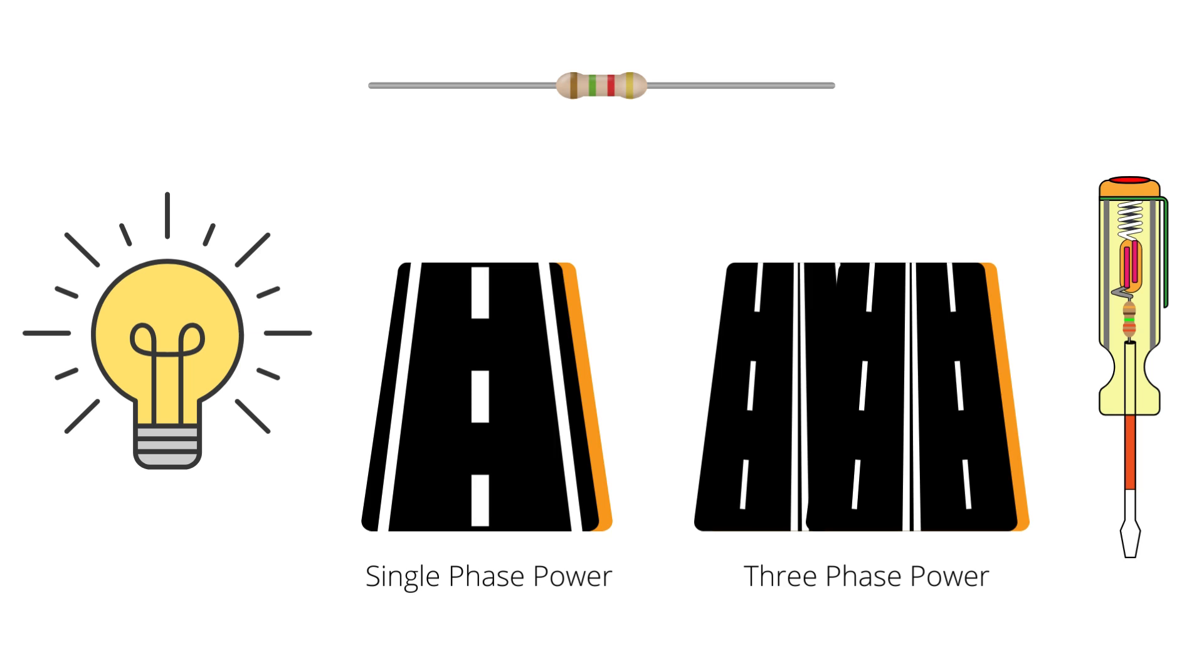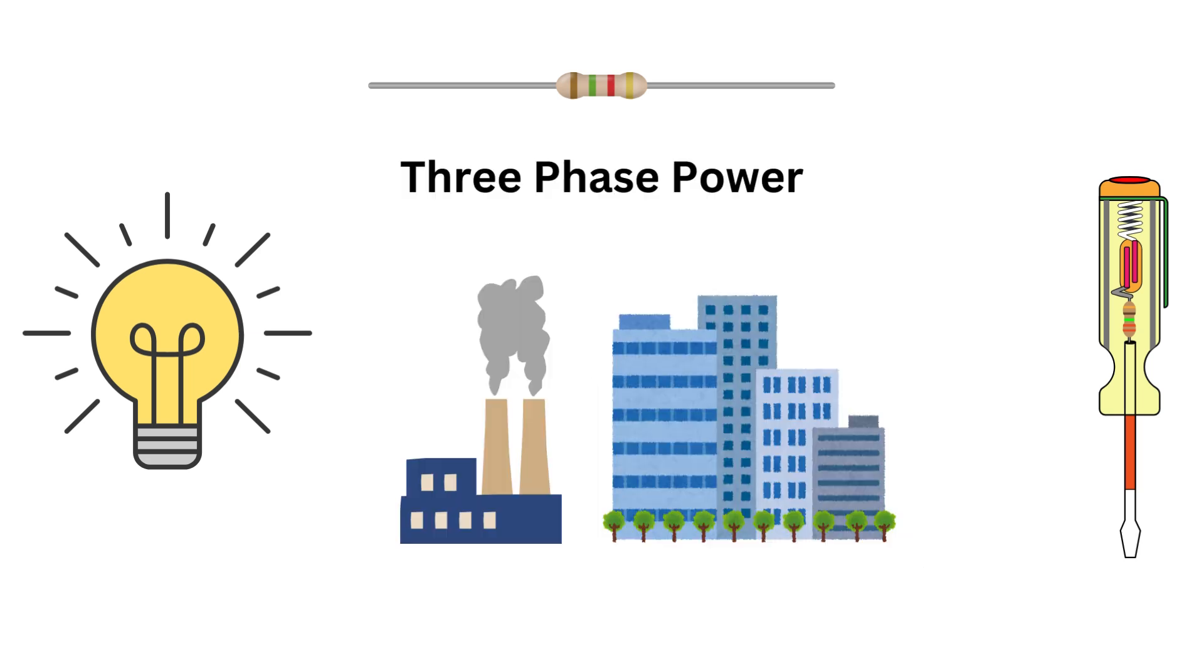Now let's move to three phase power. This is like a three lane highway, much more robust and efficient. It's used in higher applications like factories and big buildings.